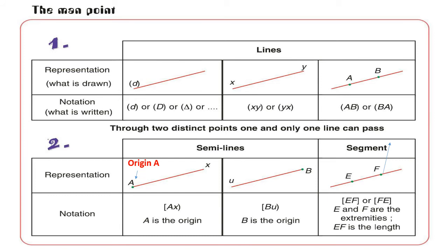Now let's move to the second example, the second semi-line B, U. Where is my fixed extremity that has a limit? B — so B is my origin. It is fixed and has a limit here, while U is unlimited. For notation: bracket, B, U, then parenthesis — B is my limited extremity (origin) and U is my unlimited extremity. The semi-line has one limited extremity and the other is unlimited, while the line has both extremities unlimited.